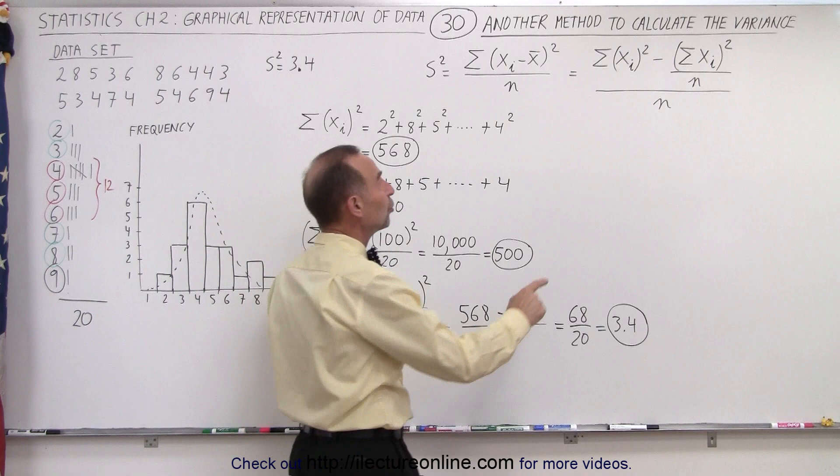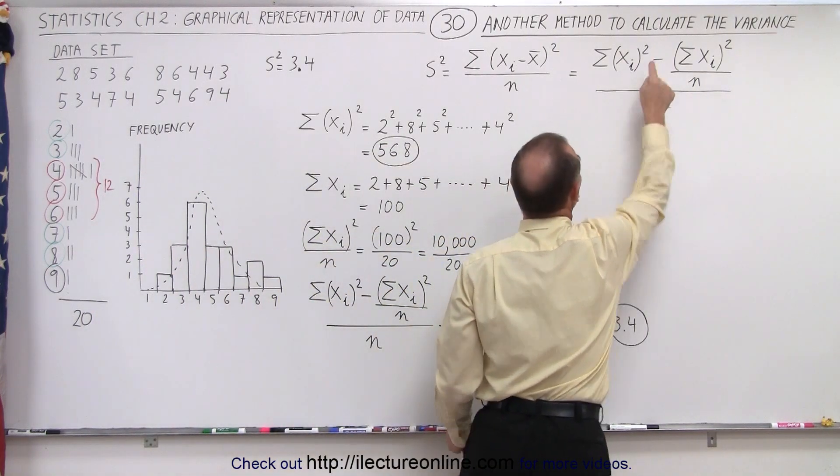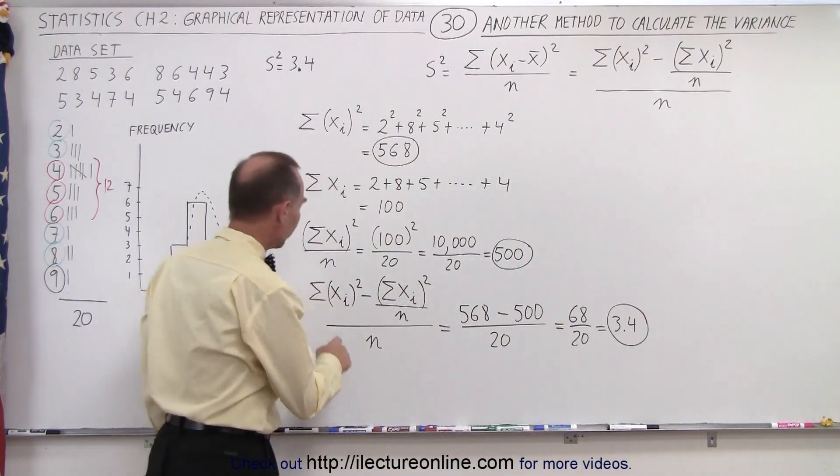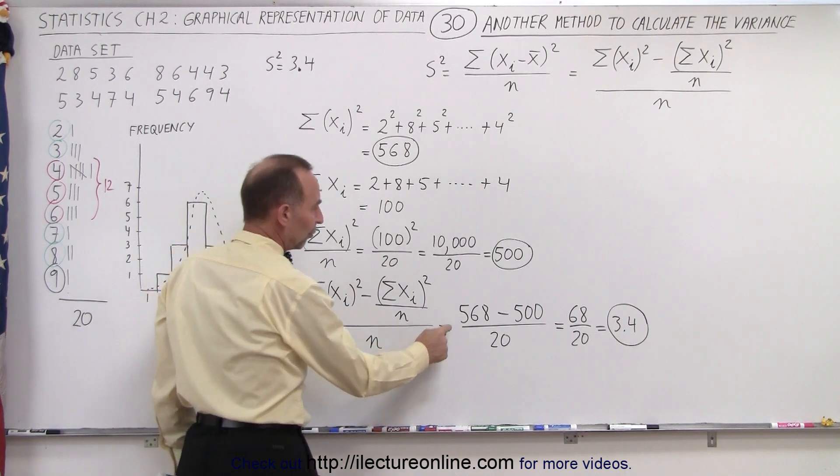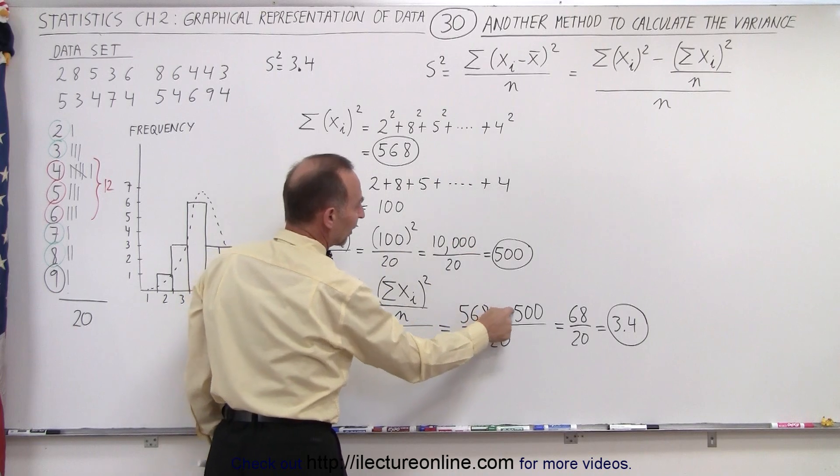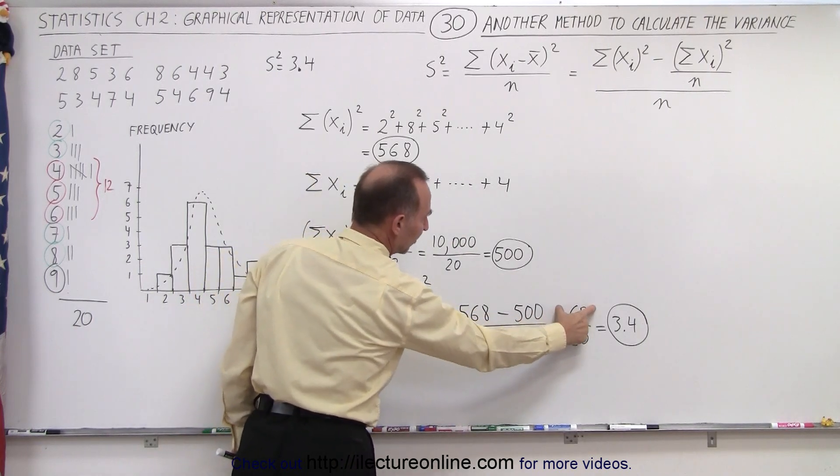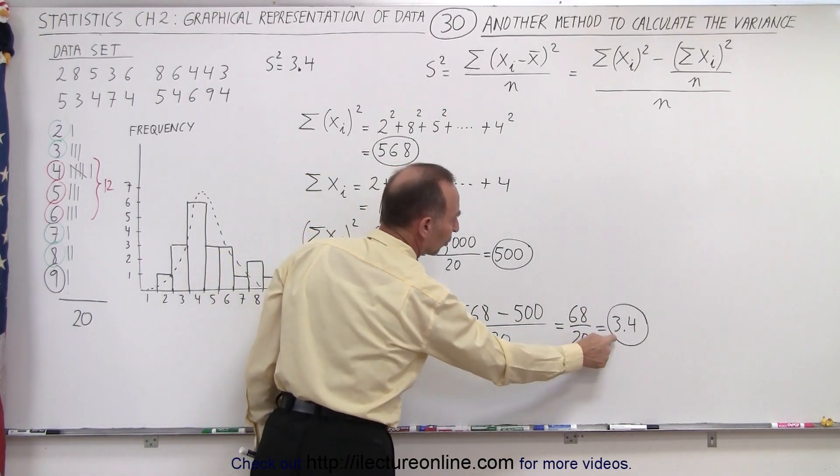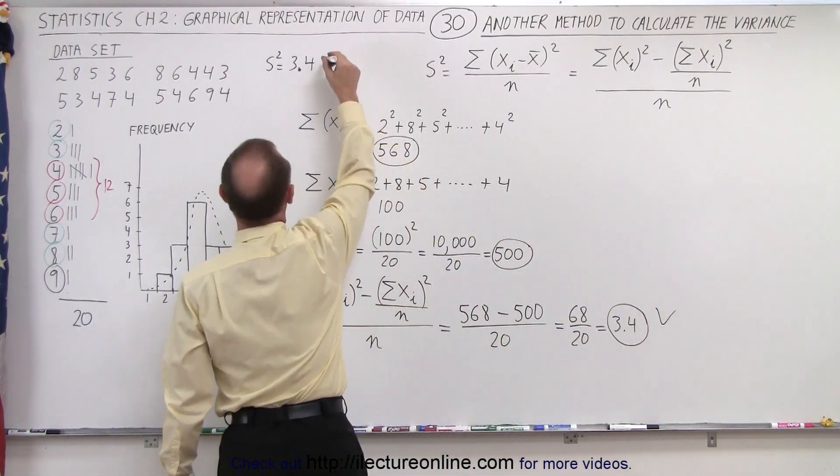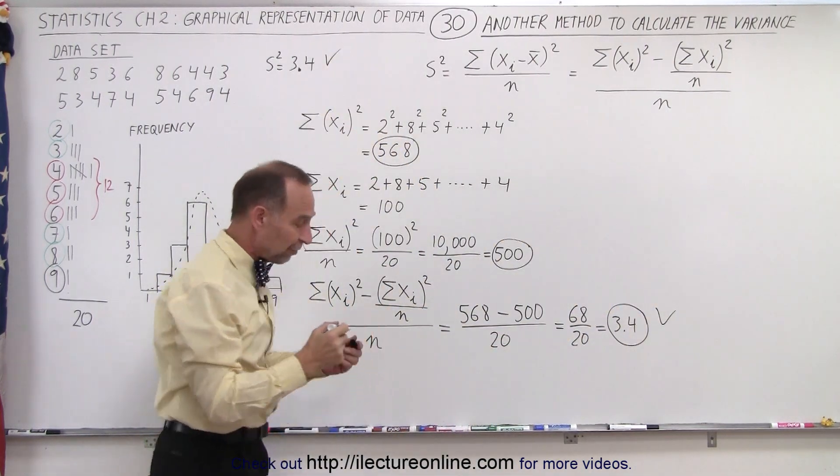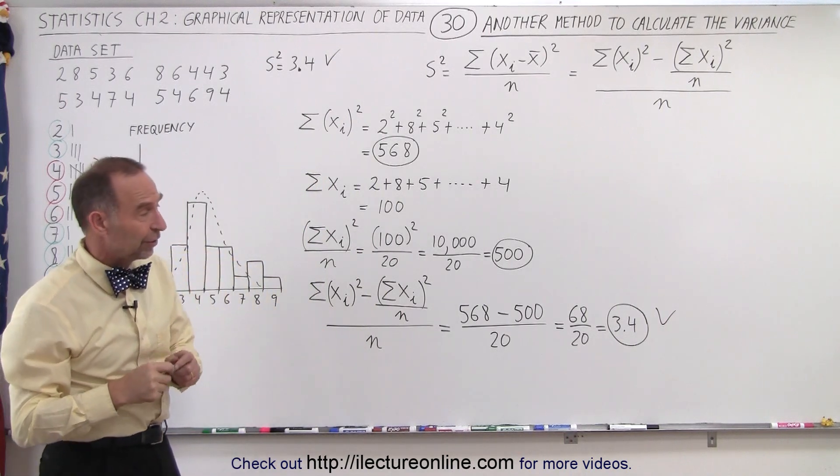Now we have the two terms in the numerator that need to be subtracted from one another. You subtract them and then divide by the number of data points once again. So 568 from here minus 500 from here is 68, divided by 20 gives you 3.4, and sure enough, 3.4 is the very same value that we had in the previous video when we calculated the variance.